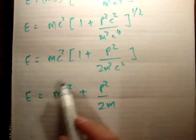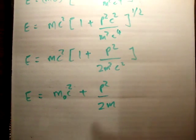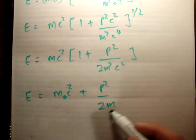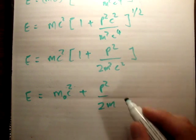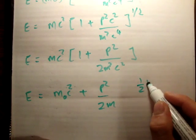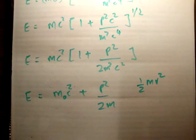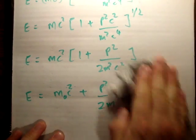What we have here is that mc² is the rest mass energy m₀c², and the p²/2m term is the kinetic energy, which is often written as ½mv². So that's the first thing we need to establish.